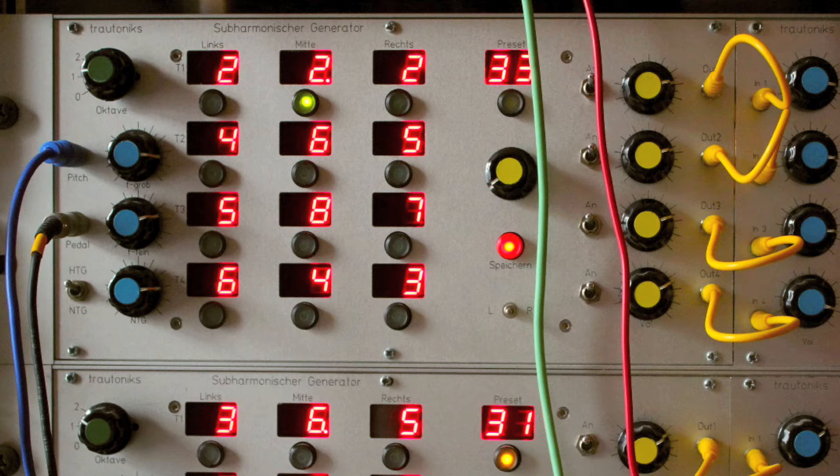The aforementioned columns of LEDs are marked links, mitter, and rex, or left, middle and right. The active sub-harmonic mixture is displayed by a decimal point. These are selected by moving one's foot from left to right, like so.